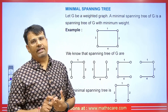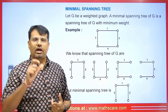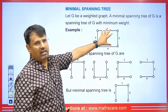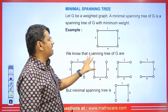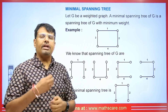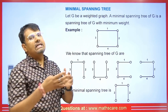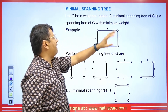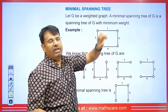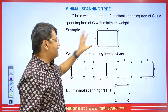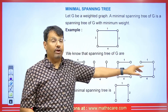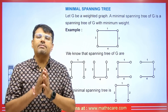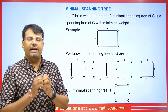The concept of a spanning tree was explained in the previous video, so watch that video so you don't have any trouble understanding this. Now, what is a spanning tree? If we have a graph, all the subsets or subgraphs formed which represent a tree are called spanning trees. Here, let G be the weighted graph. A minimal spanning tree of G is a spanning tree of G with minimum weight.